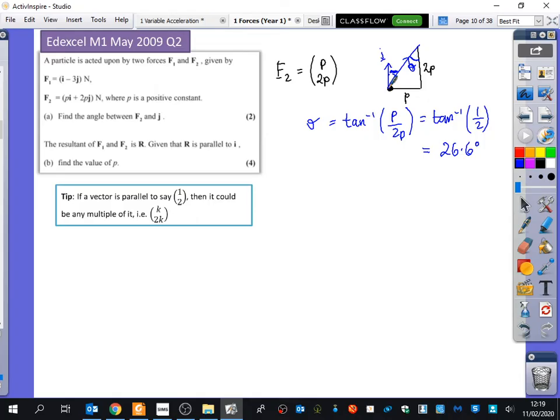Now, this is where it gets a bit more interesting. Part B of the question says, this is the most important bit before we do this exercise to listen really carefully to. The resultant of F1 and F2 is R. Given that R is parallel to I. Find the value of P.